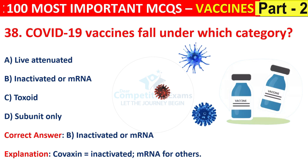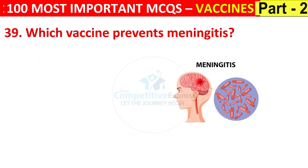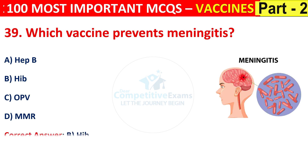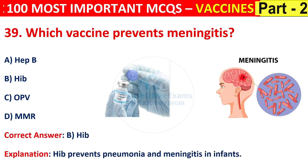Question number 39. Which vaccine prevents meningitis? Options are hepatitis B, HIV, OPV, or MMR. The correct answer is B, that is HIV. HIV prevents pneumonia and meningitis in infants.